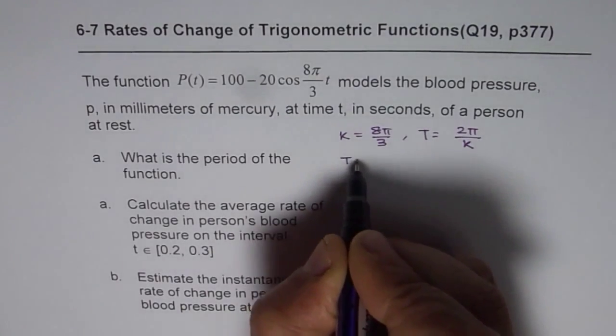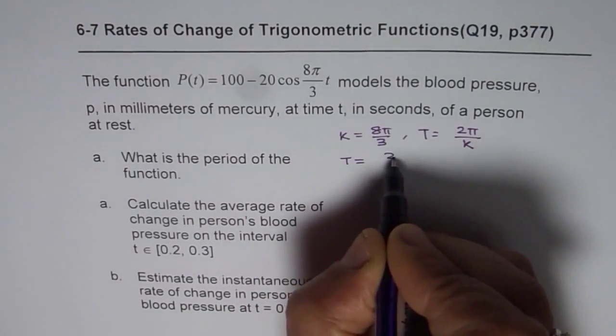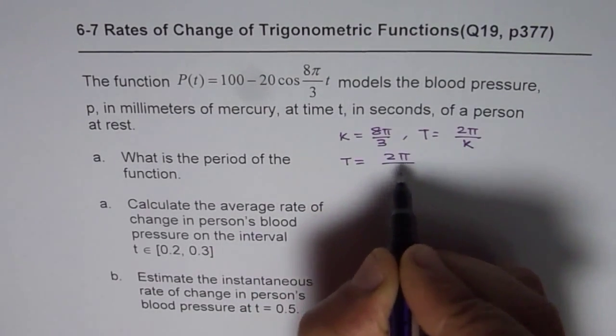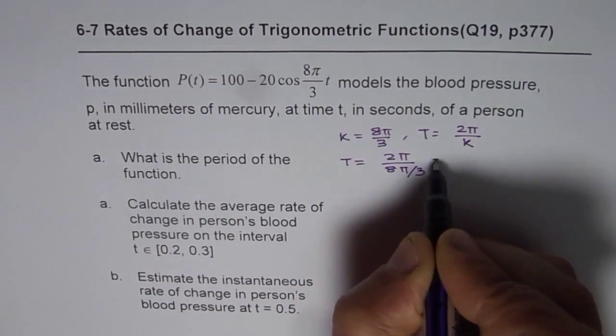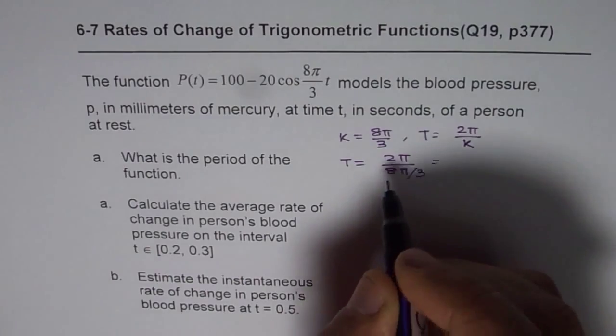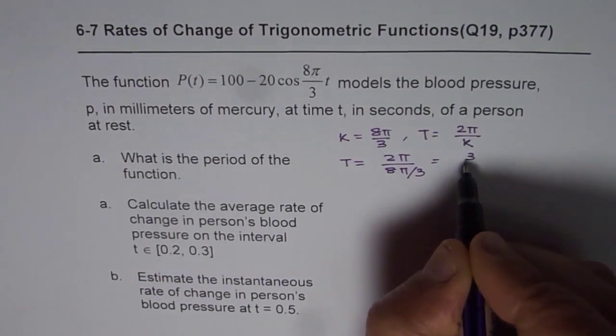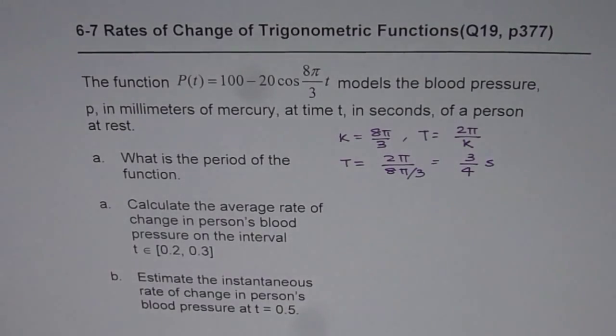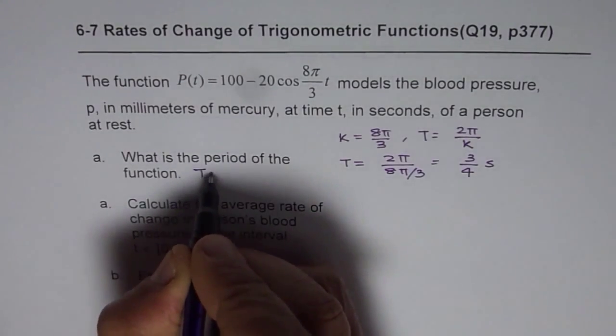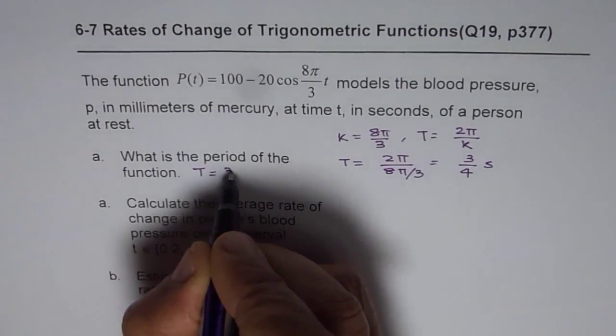So time period T equals 2π divided by 8π/3. That gives you π and π cancels, then you get 3/4 and the units are seconds. So you get time period is equal to 3/4 seconds.